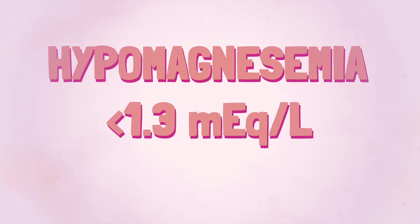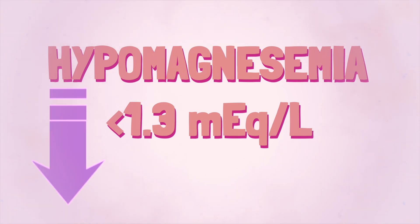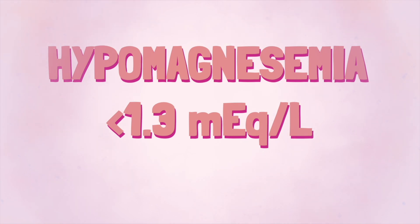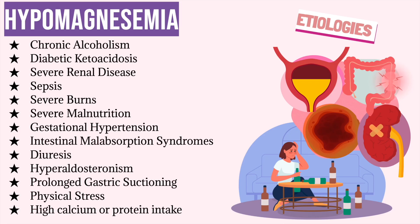Let's begin by talking about hypomagnesemia, which is when there is a serum magnesium level below 1.3 milliequivalents per liter. Let's first go over some potential reasons why hypomagnesemia may occur, starting with alcohol abuse. Ethanol, the main ingredient found in alcohol, acts as a diuretic, which pulls magnesium and other essential electrolytes out of the body, eventually depleting the amount of magnesium that the body has stored.